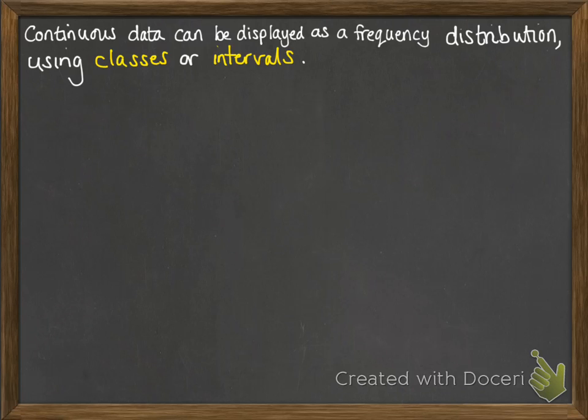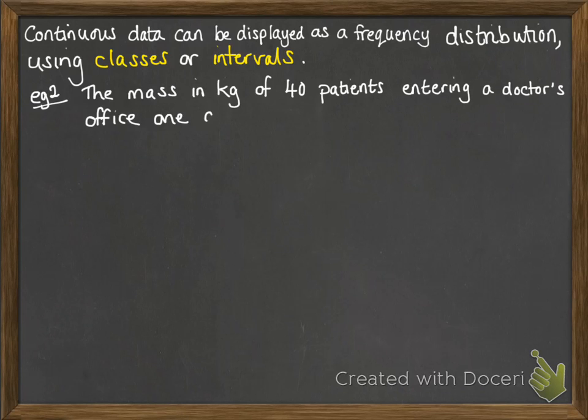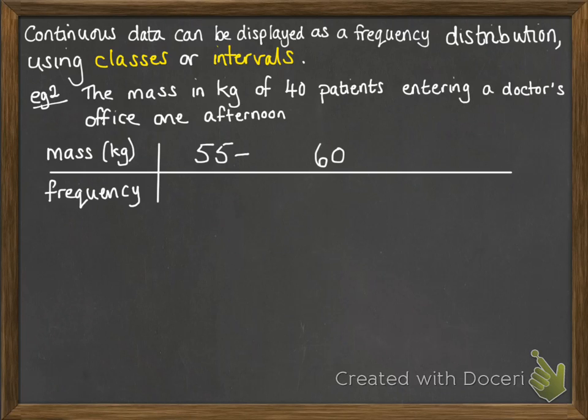But we have to use classes or intervals - they're referred to in both ways, so you need to know both of those keywords. For example, we're looking at the mass in kilos of forty patients that entered a doctor's office one afternoon. This gets summarised in a table like this.